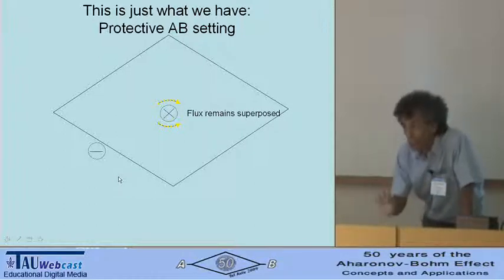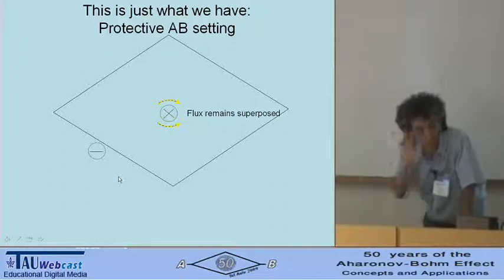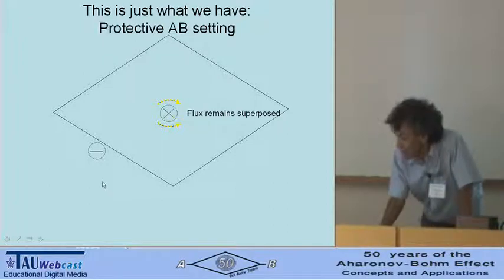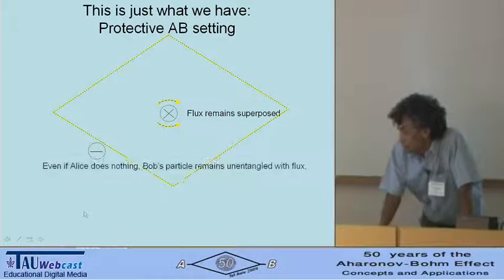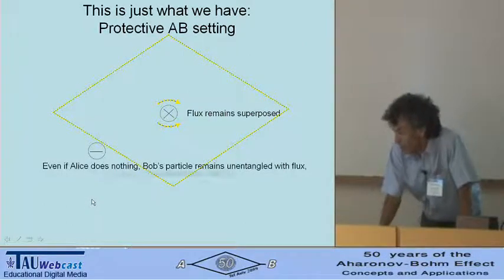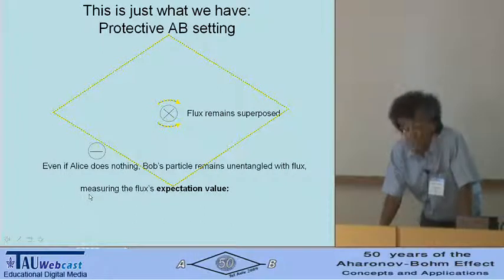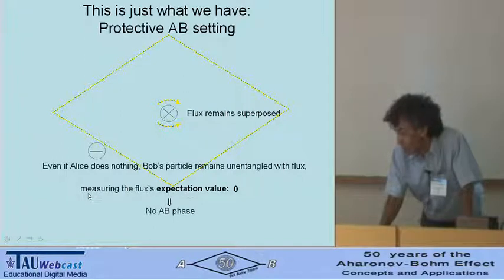The flux remains superposed because of what we did, because of the two things, both the Josephson junction removing the degeneracy and the interaction being very slow. Even if Alice does nothing, Bob's particle remains unentangled with the flux, measuring the flux's expectation value, which is incredibly zero. No AB phase, no paradox.